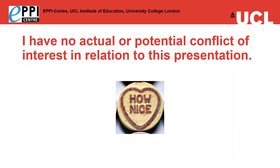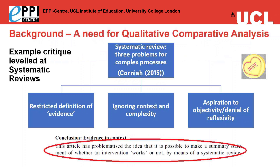There are a number of love hearts included in this presentation. I'd like to start the background by thinking through the needs for qualitative comparative analysis. Systematic reviews have been subject to critique by a number of different authors. One example is a critique by Fiona Cornish, who critiqued systematic reviews for complex interventions on the basis of three dimensions: a restricted definition of evidence, tending to focus on randomised control trials; ignoring context and complexity; and, in an aspiration to be objective, denying the reflexivity and the role of researchers.